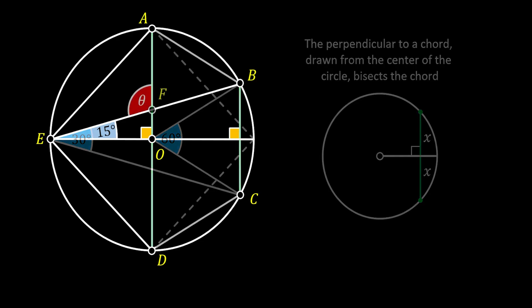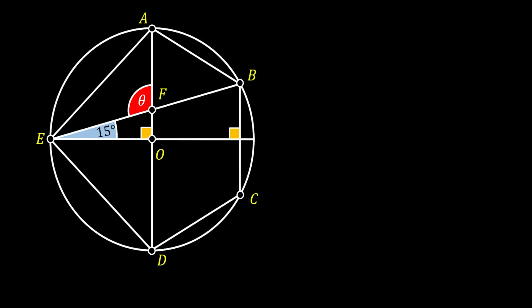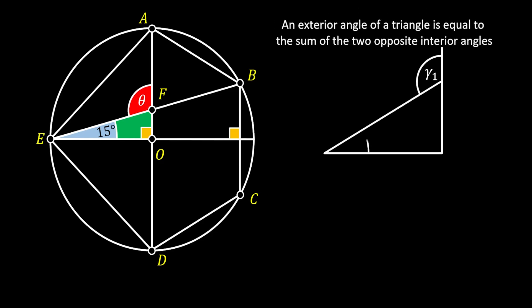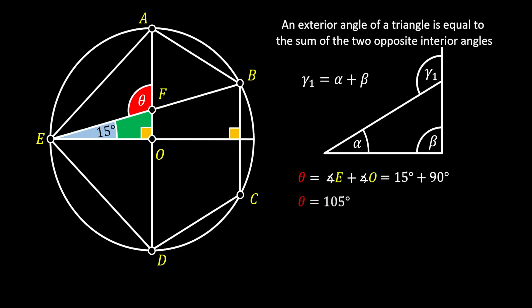Looking at triangle EOF, we use the property that an exterior angle of a triangle equals the sum of the two opposite interior angles. We can calculate angle theta as the sum of the interior angles at points E and O. Since those two angles are 15 degrees and 90 degrees, we conclude that angle theta equals 105 degrees — the same solution. If you found another way to solve this interesting problem, please write it in the comment section below. Until next time, see you all and take care.